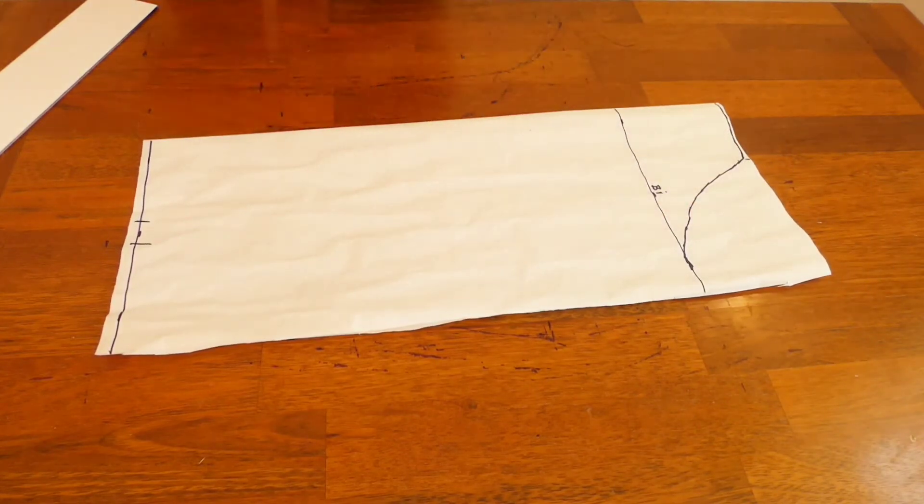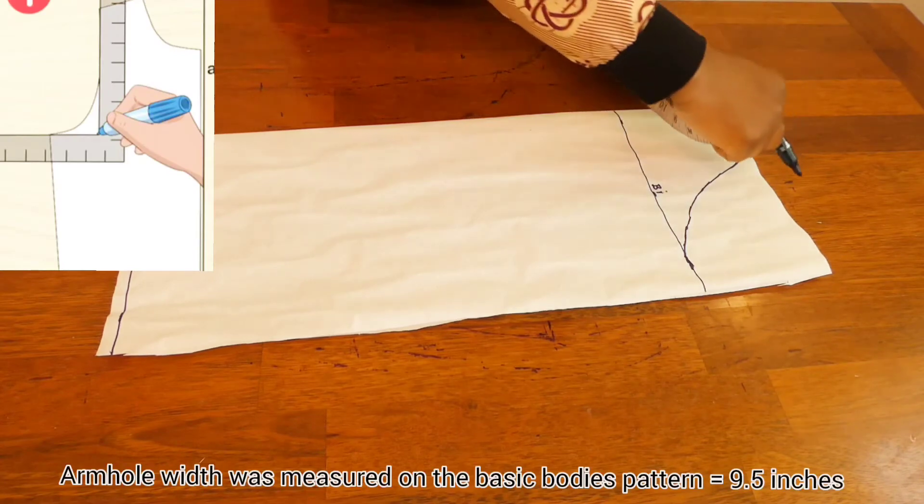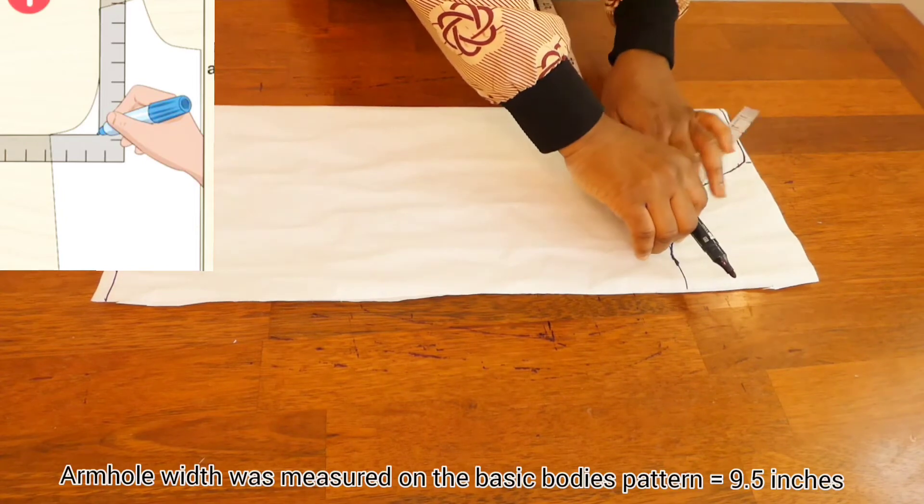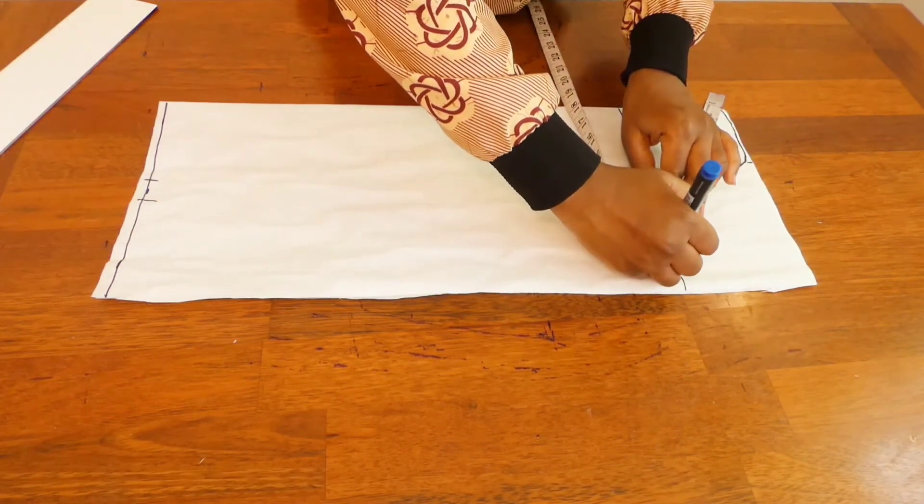And right now we already have—we only curved this out, we didn't measure it, so we just go ahead and measure it back. What we got from the armhole was nine and a half inches, so I'm just going to place my tape rule here and I'm just going to go ahead and measure. So this is where my nine and a half stops, so I'll just be marking nine and a half here.